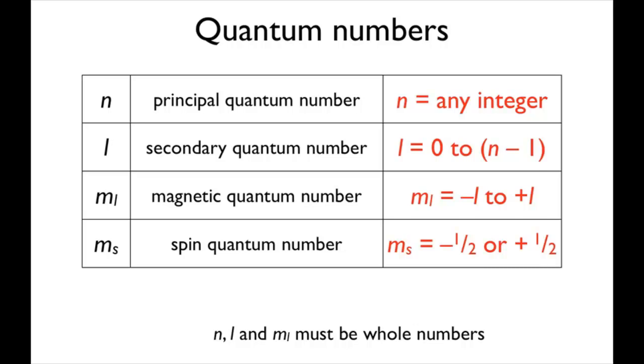The three quantum numbers for an orbital are n, the principal quantum number, which could be any integer from 1 to infinity, l, the secondary quantum number, which could be any whole number from 0 to n minus 1, and ml, the magnetic quantum number, which can be any whole number from minus l to plus l.